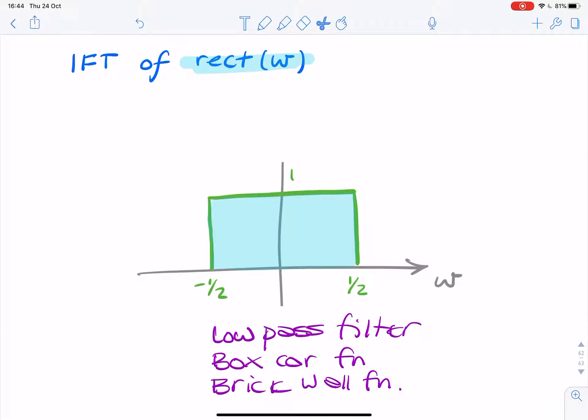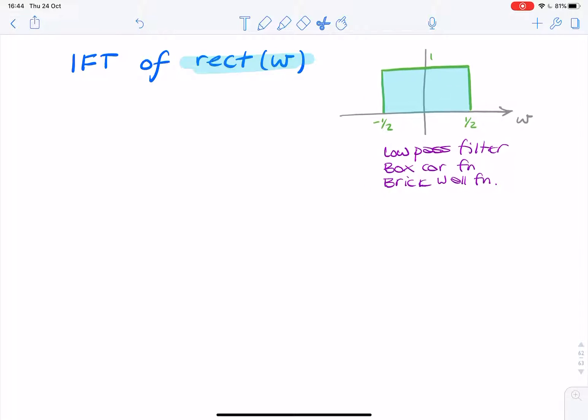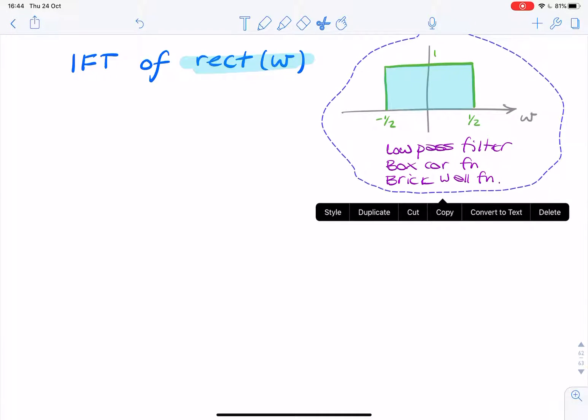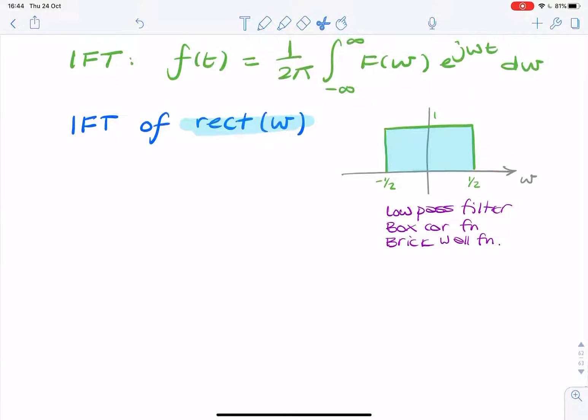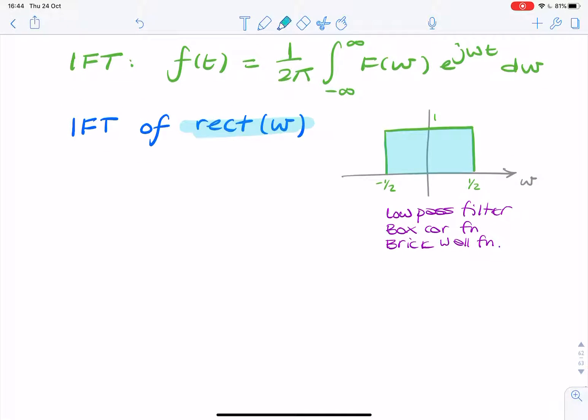Now remember, the Fourier transform of a rectangular pulse is a sinc function, so we should expect the inverse Fourier transform to also give us a sinc function. So let's move this out of the way. The first thing we should think about in finding the inverse Fourier transform is the inverse Fourier transform integral.